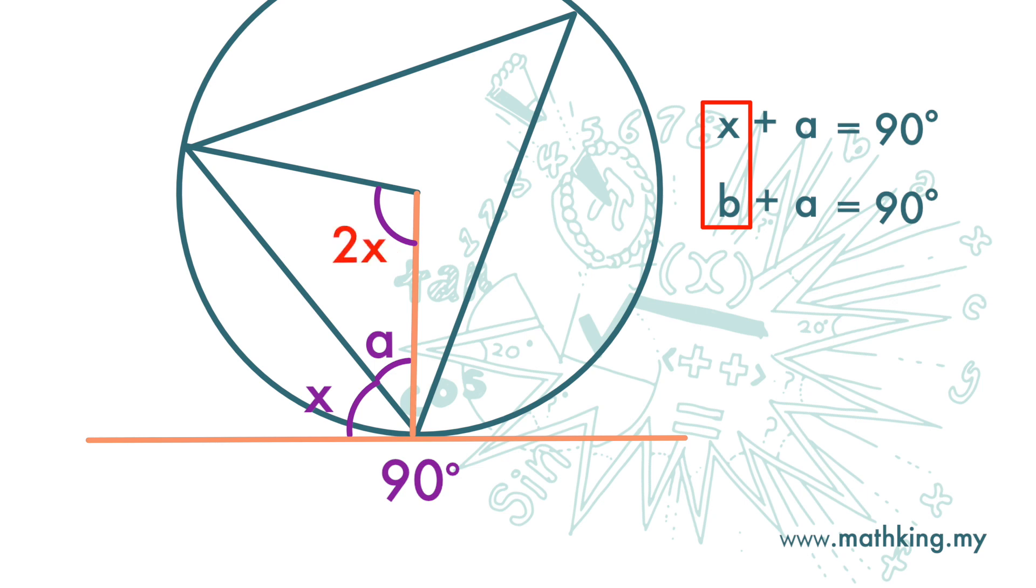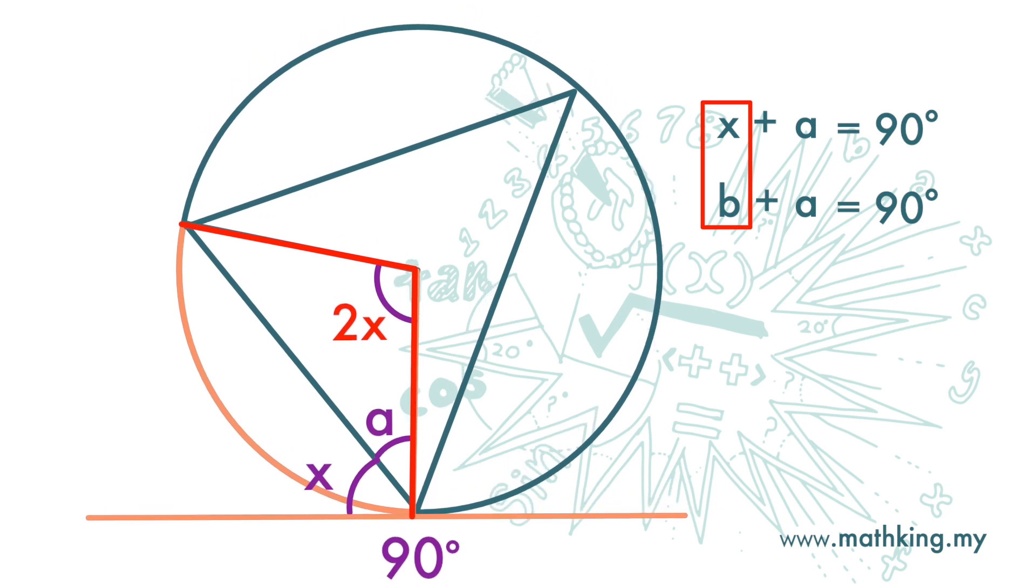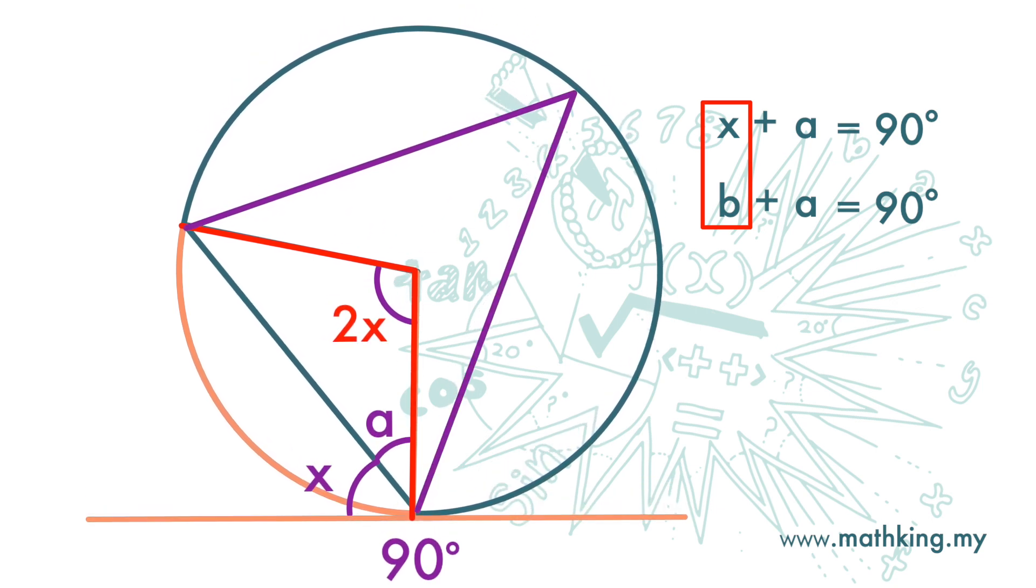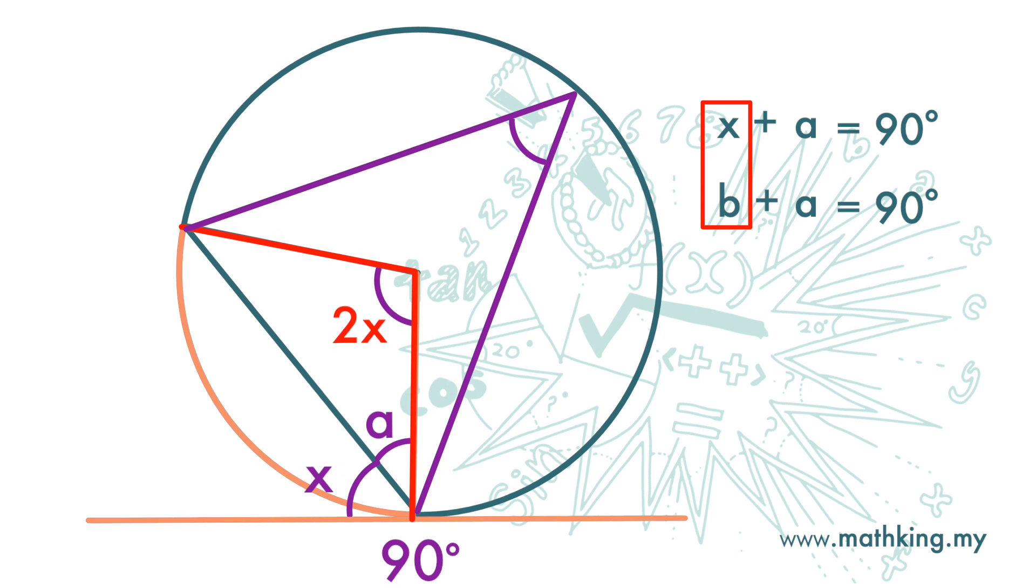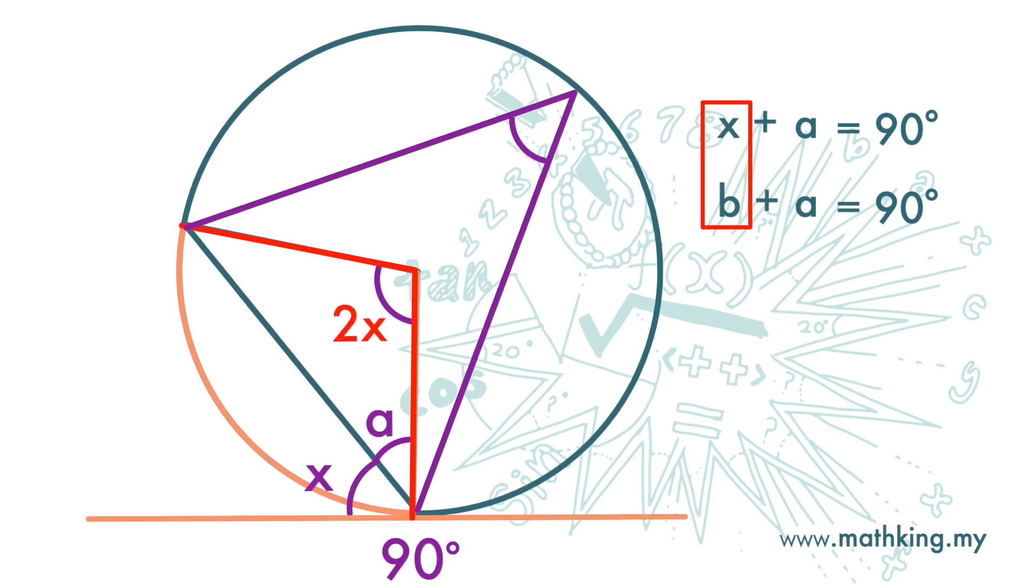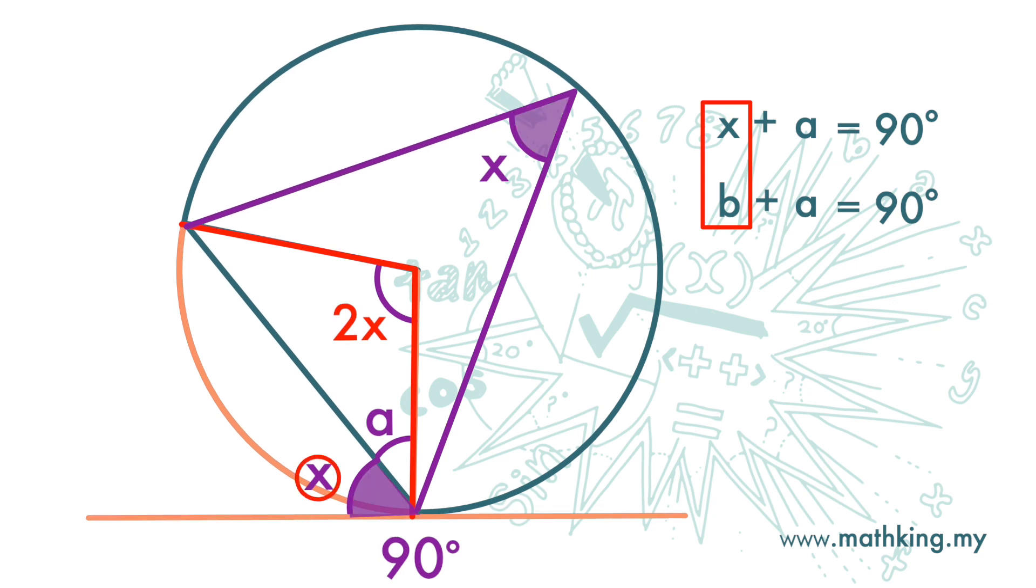This angle at the center is subtended by this arc. The same arc also subtends an angle at the circumference. Since the angle at center is twice the angle at the circumference, the angle at the circumference is also x. Therefore, these two angles are equal.